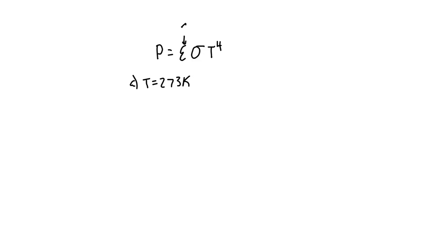In this case, since we're not given any information, we're going to assume we have a perfect black body, so that's equal to one. This sigma here is our constant of proportionality, and it has this value here, and then this T to the fourth, that's temperature to the fourth power.